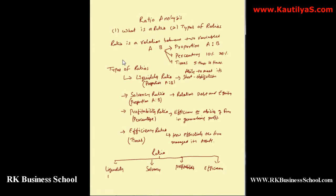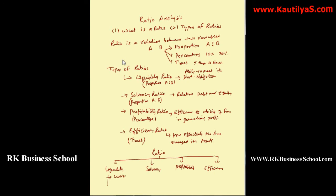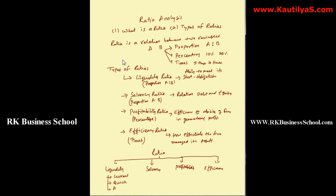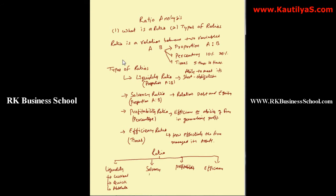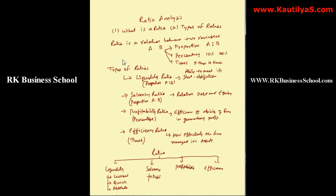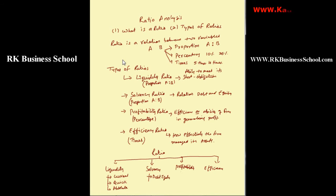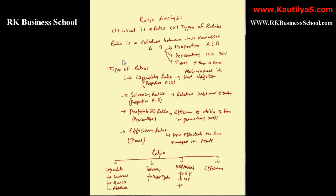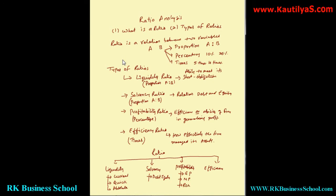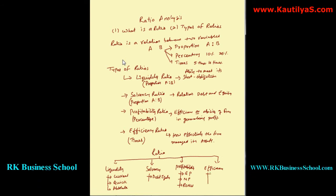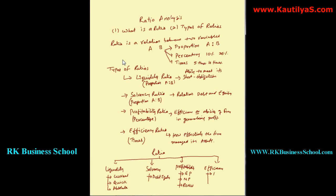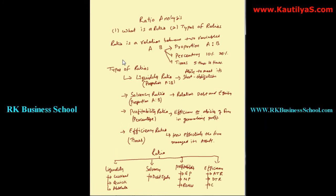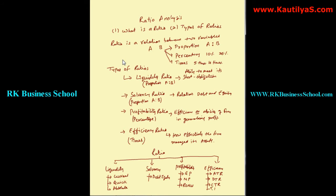Examples of liquidity ratios include current ratio, quick ratio, and absolute liquid ratio. Solvency ratios include debt-equity ratio, etc. Profitability ratios include gross profit ratio, net profit ratio, return on net worth, and others. Efficiency ratios include assets turnover ratio, debtors turnover ratio, creditors turnover ratio, and inventory turnover ratio.